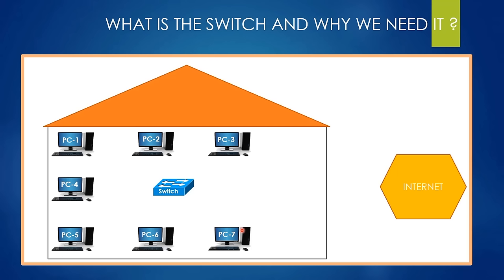We have a switch to accomplish the communication of computers. However, the question is: can these seven computers communicate with each other right now? The answer is a big no, because first of all these seven computers need to interact with the switch somehow. We must use cables to connect computers to the switch — we are connecting all the computers to the switch with the help of cables.